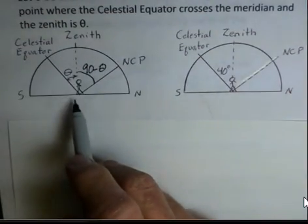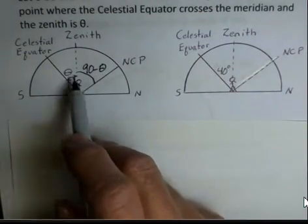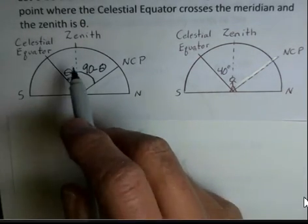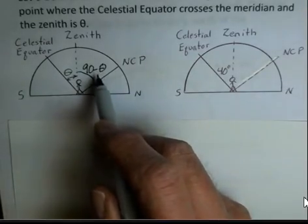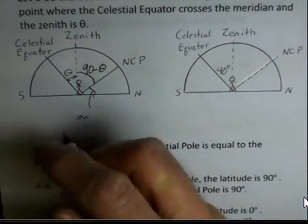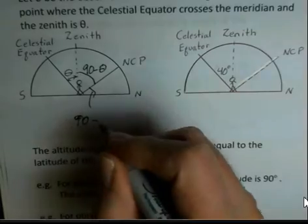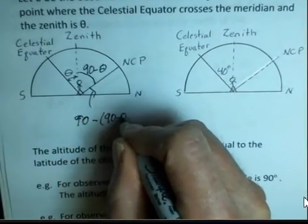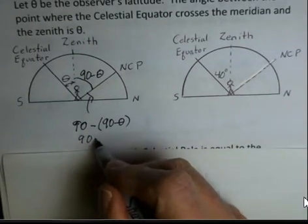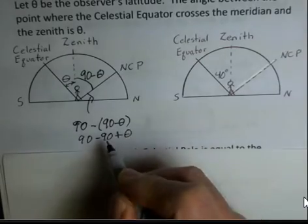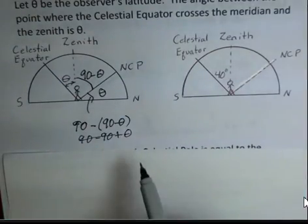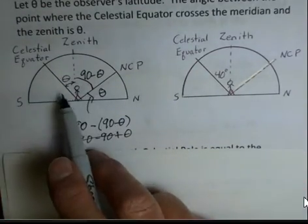What is the angle between the North Celestial Pole and the celestial equator? It's 90 degrees. So if we use up theta degrees here, this angle is going to be 90 minus theta. The zenith — what's its angle compared to the horizon plane? It's 90 degrees. So the altitude of the North Celestial Pole becomes 90 minus (90 minus theta), which gives us 90 minus 90 plus theta. The 90 minus 90 is zero, and we have angle theta. The altitude of the North Celestial Pole is theta, where theta is the latitude.